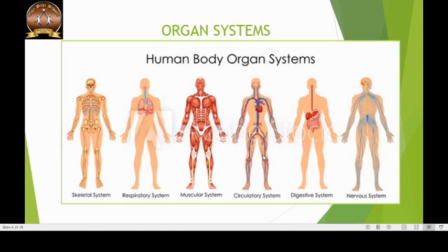The skeletal system is one of the 11 organ systems in the human body. An organ system is a group of interrelated organs which work together to perform a common function. For example, the respiratory system consists of the nose, the windpipe and the lungs, which work together to perform the function of respiration. The circulatory system consists of the heart and a network of blood vessels which distribute oxygen and nutrients throughout the body.